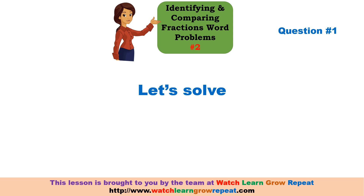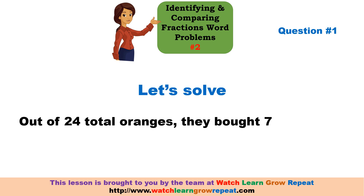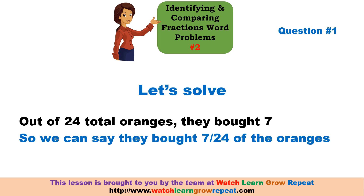Let's solve question number one. Out of the 24 total oranges, they bought seven. So we can say they bought 7/24 of the oranges.